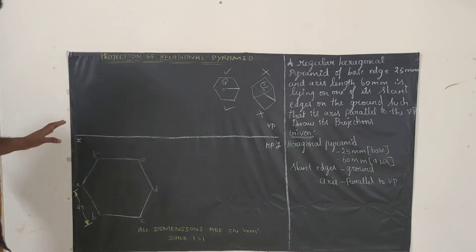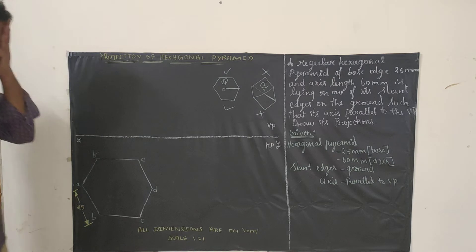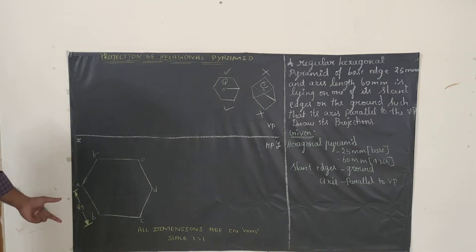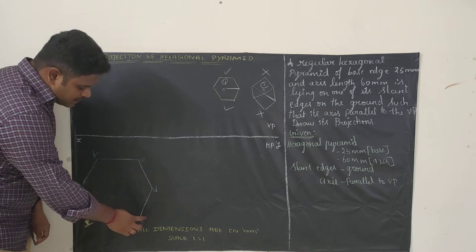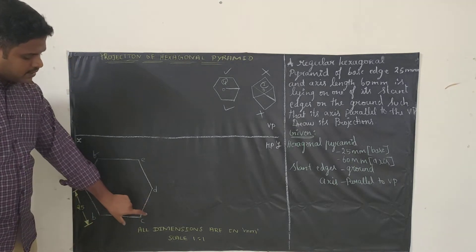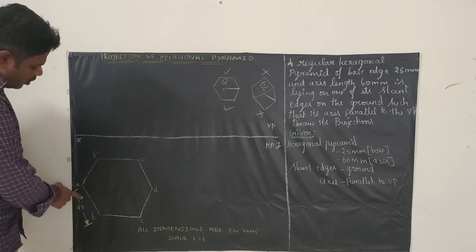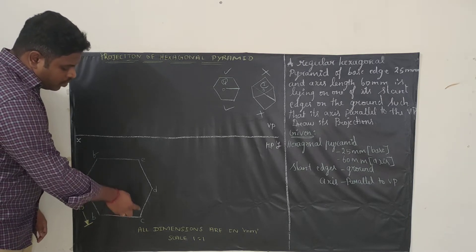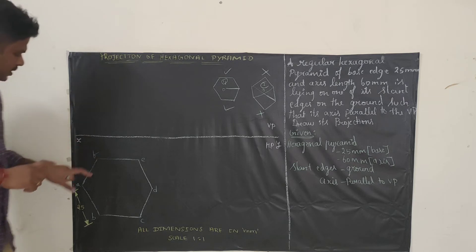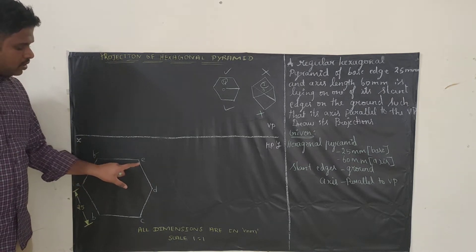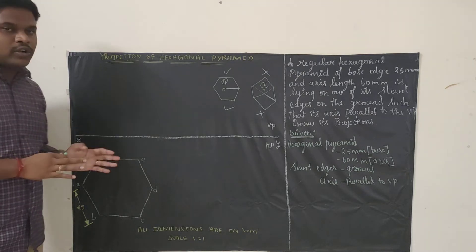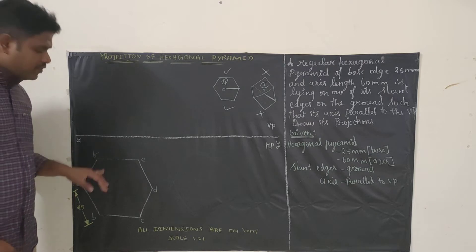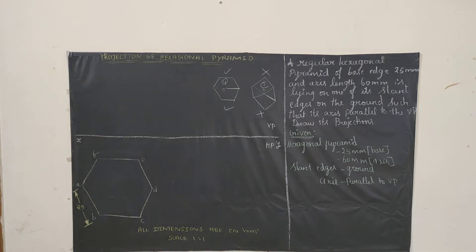First draw the reference line. Next, draw the hexagon. The base is 25 mm, so draw a base of 25 mm. The interior angles for the hexagon are 60 degrees — take 60 degrees and draw a line for 25 mm, then another at 60 degrees for 25 mm. Use your compass set to 25 mm to complete the hexagon. Name the vertices A, B, C, D, E, F — or P, Q, R, or 1, 2, 3, as none is specified.